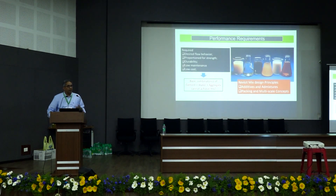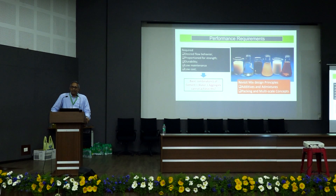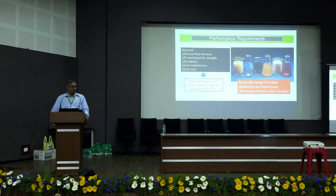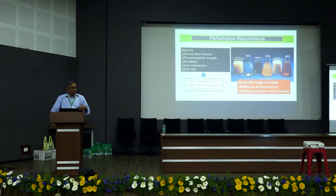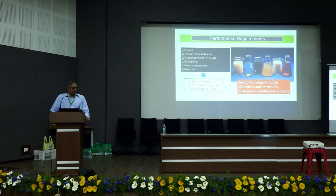How do I deliver on performance requirements? I would want to be able to tailor the flow behavior of concrete — if it is self-leveling, it should level by itself; if it is for a printing application, it should hold its shape and allow buildability. Concrete would be proportioned for strength, but strength is only one parameter out of several. Then there is durability — geography-specific and location-specific — and low maintenance: whatever I make should look like new after 50 years without maintenance, resisting biological attack, acid attack, and changing climate. All of this has to be done at low cost, because if we pump up the price of concrete, there are no takers.